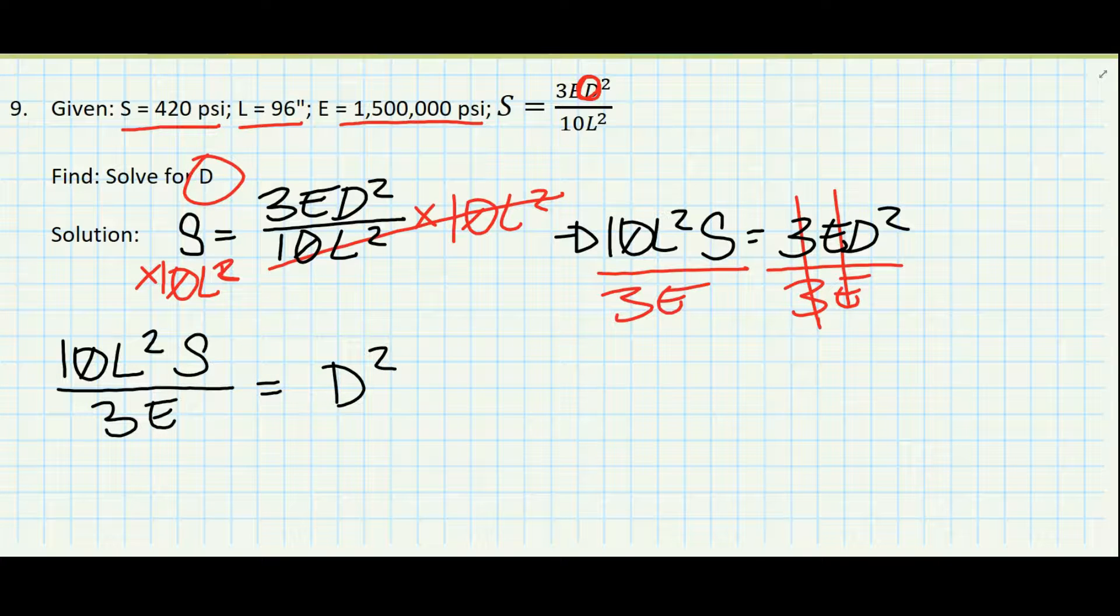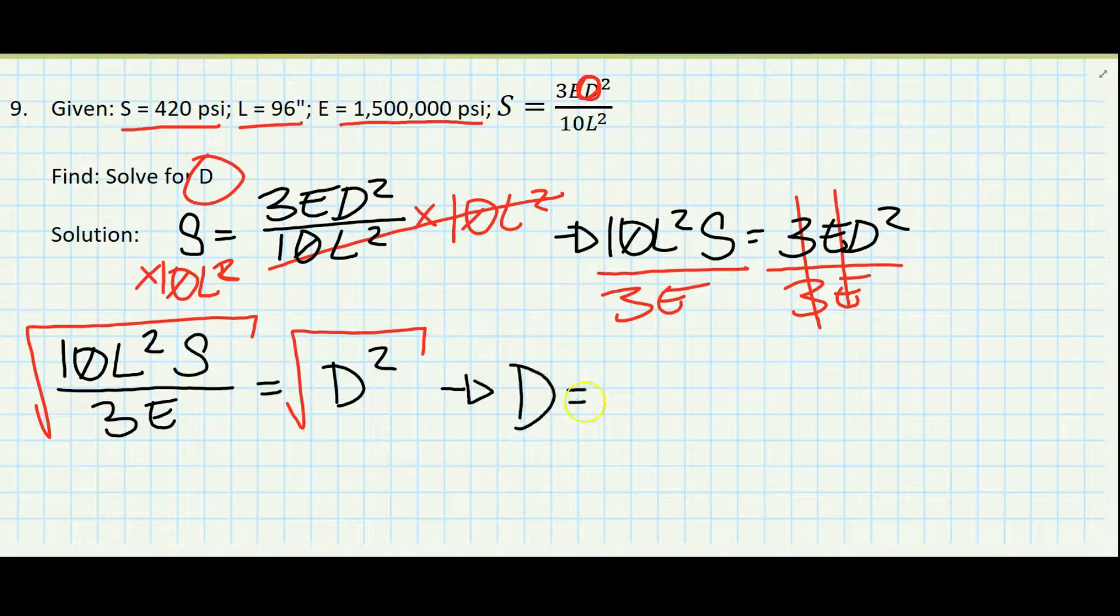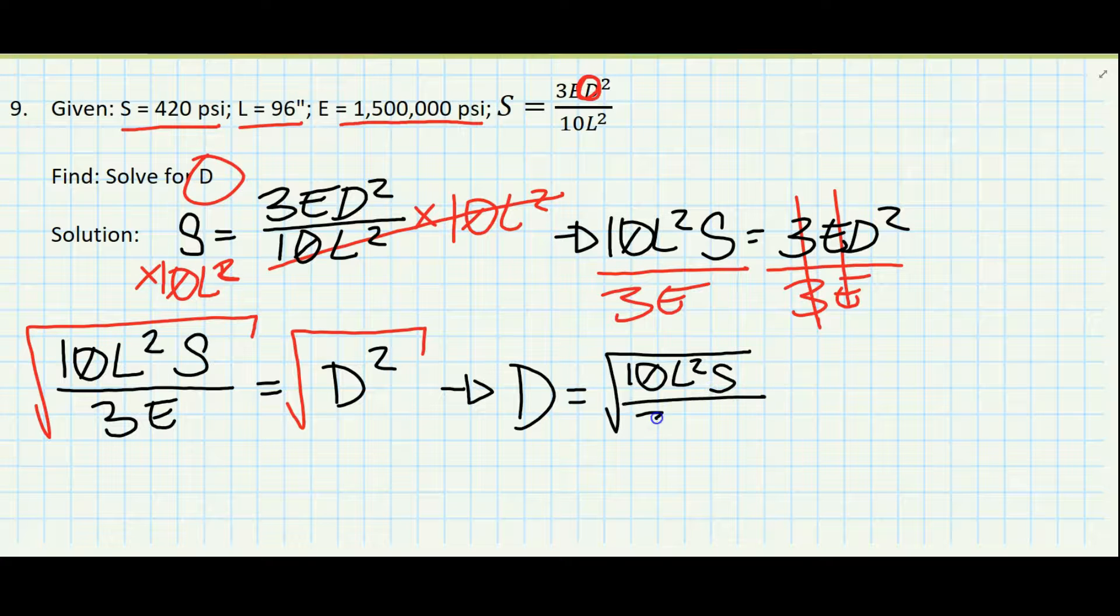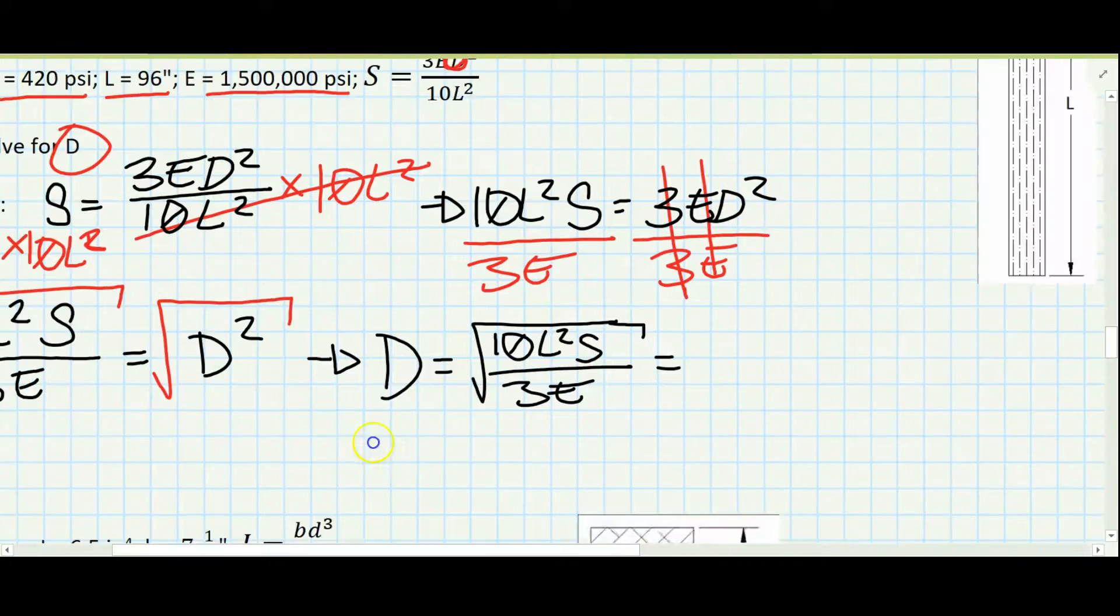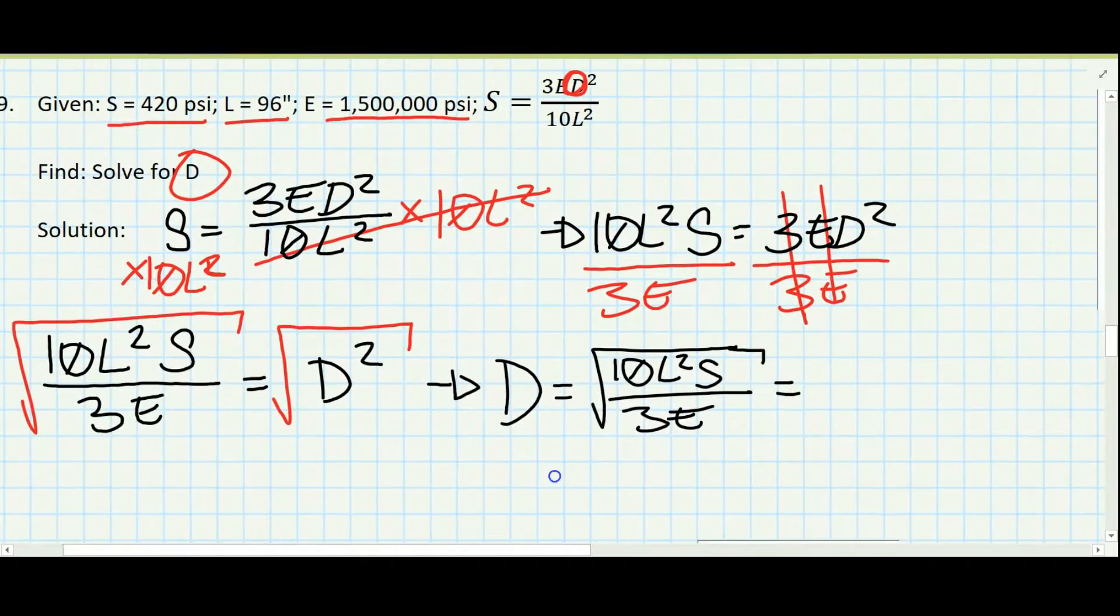Finally, take the square root of both sides. We end up with D equals the square root of ten L squared S over three E. And now all we need to do is plug in numbers.